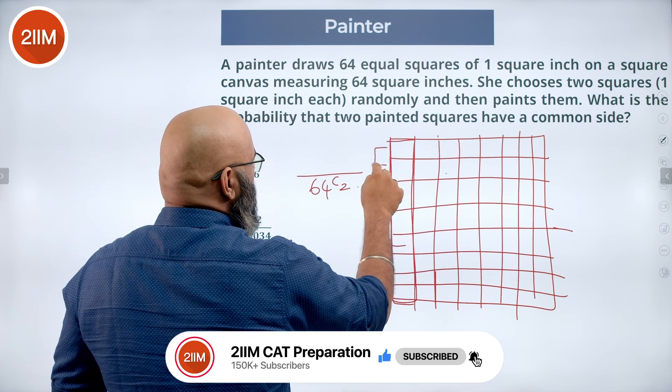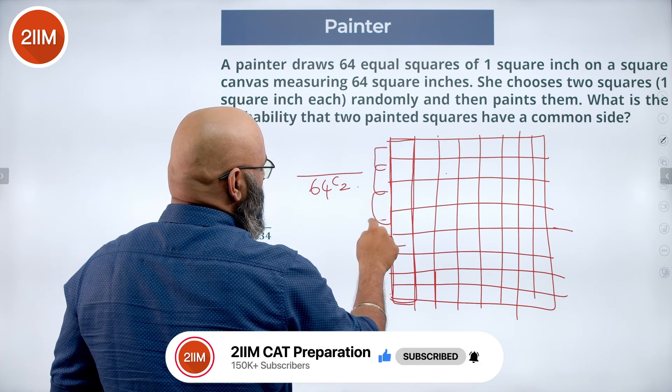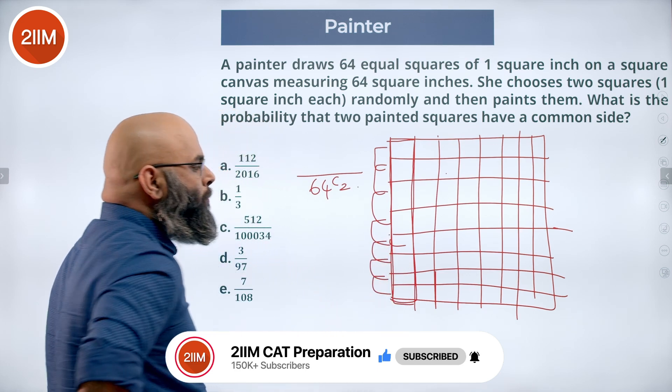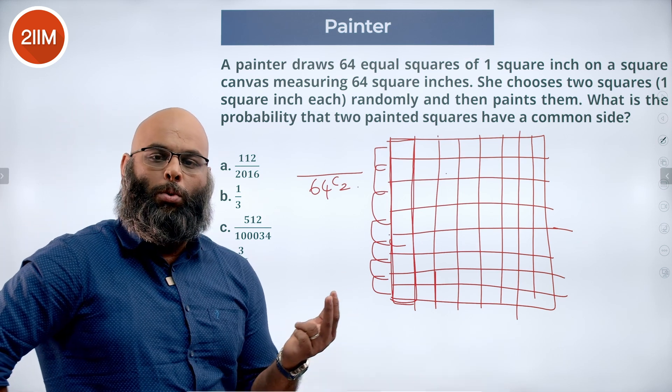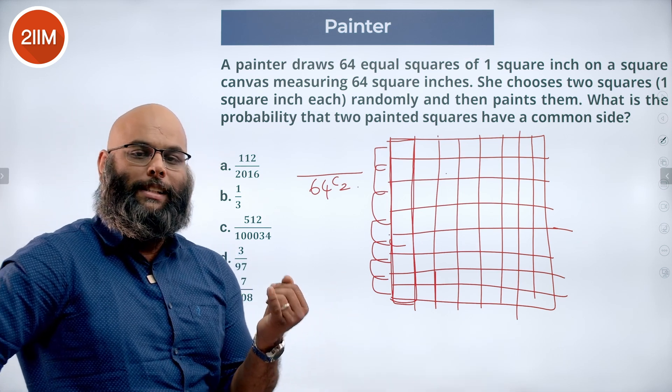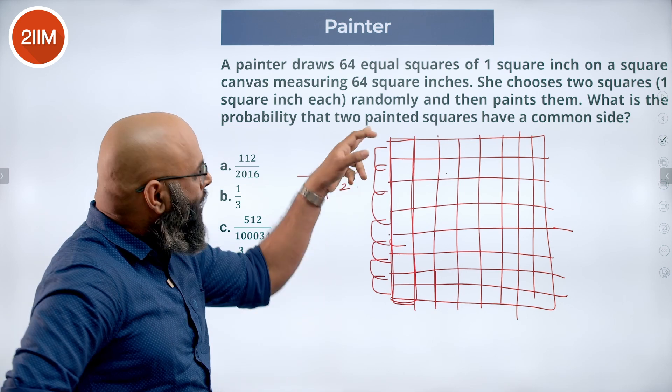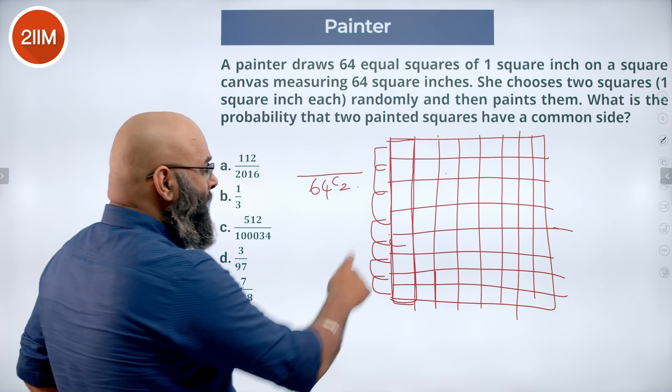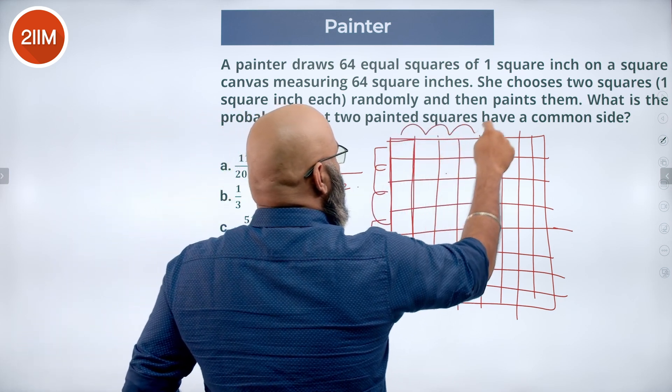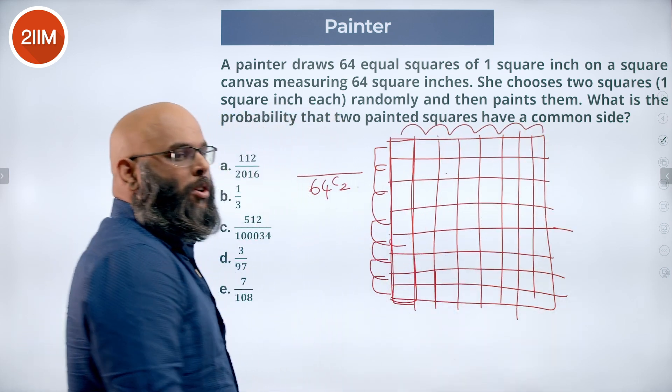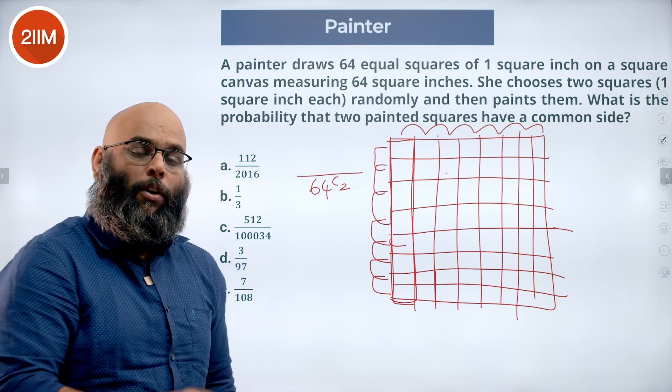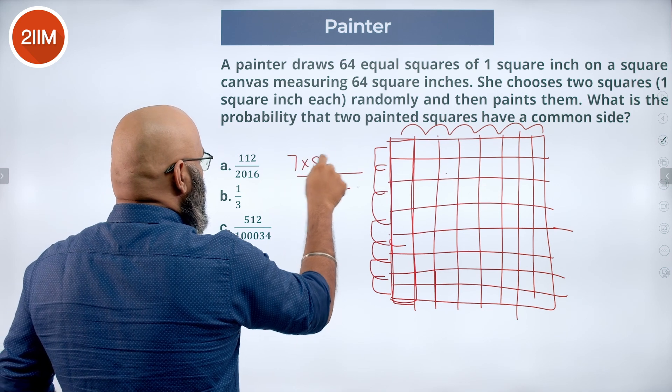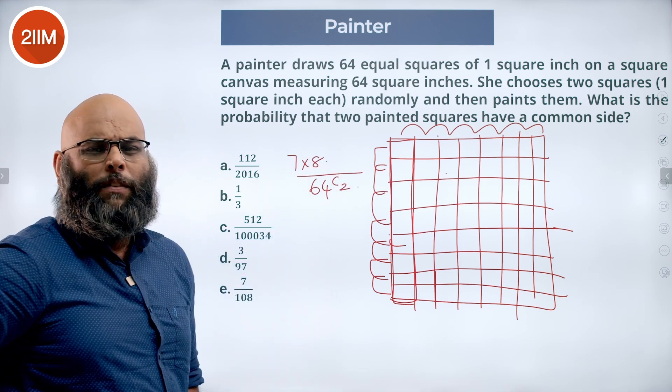So it can either be 1 and 2, it can be 2 and 3, 3 and 4, 4 and 5, 5 and 6, 6 and 7, 7 and 8. I have 7 different sets of 2 boxes that share a common side. And this occurs in all the 8 columns that we have. So 7 sets of 2 adjacent squares for 8 such columns gives me 7 into 8, which has 56 possibilities.